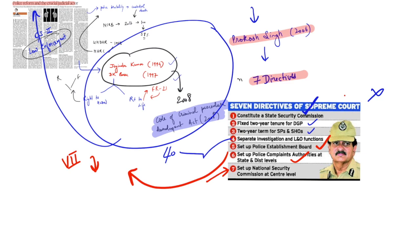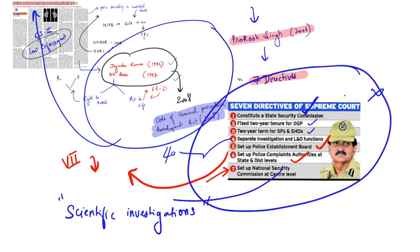Moreover, apart from them, judiciary has also announced judgments on scientific investigations such as narco analysis, ensuring video recording and having the CCTV installed in the prisons. But again, they have also not been implemented. Therefore, in the absence of genuine reforms, there will be the police brutalities and this kind of things will be coming. So we need to expedite on this particular front.